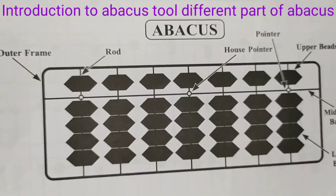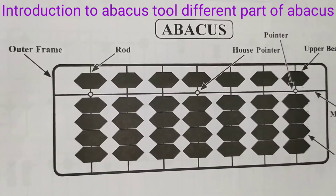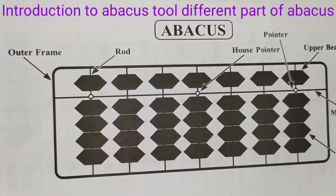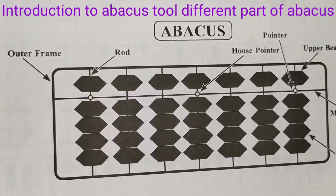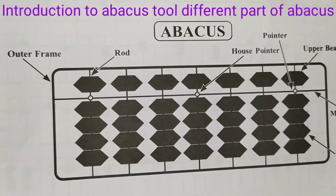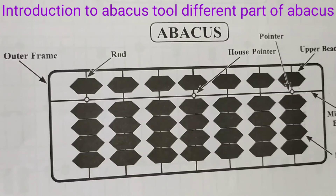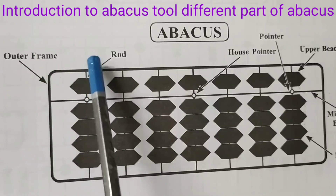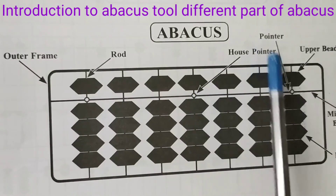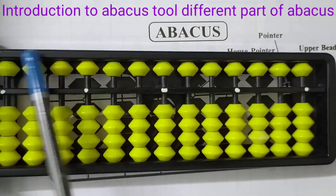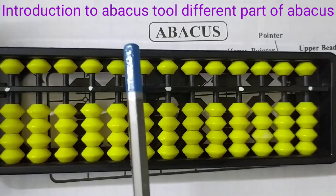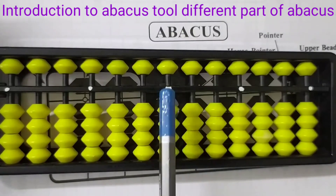Now we learn the introduction to the abacus tool and its different parts. You will see in this picture the abacus tool, which includes the outer frame, roots, house pointer, pointer, upper beads, and lower beads. This is the outer frame, roots, house pointer, upper beads, and lower beads. You will see these parts in the abacus.